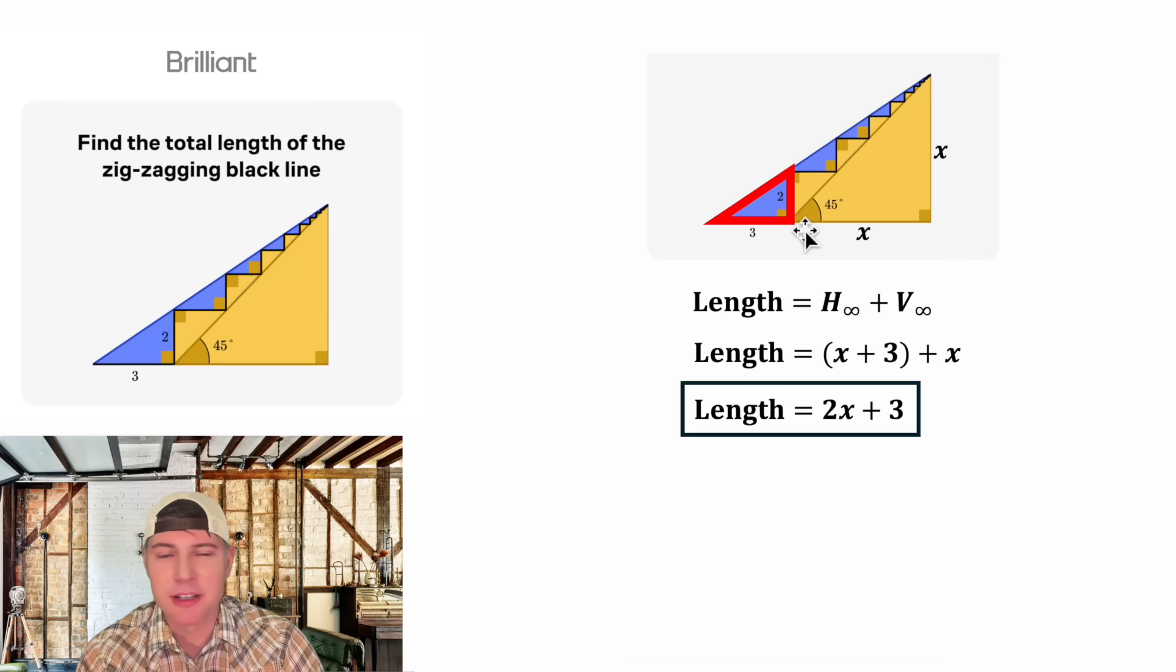Then they recognize that this triangle is similar to this triangle because they both have this shared angle and they both have a 90 degree angle which makes the last angle have to be the same. So they made a proportion of the sides.